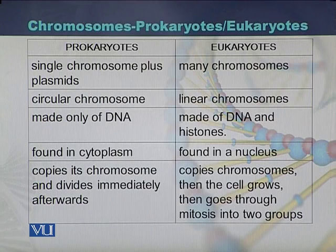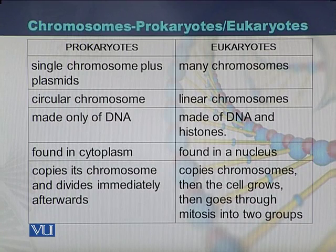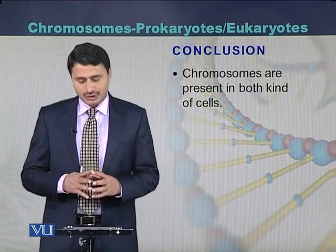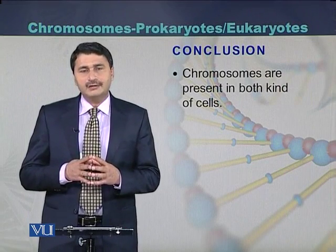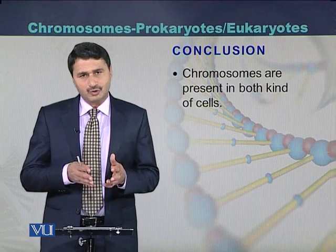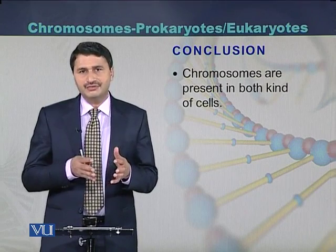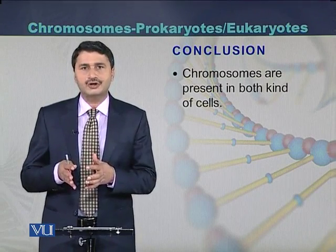Prokaryotic chromosomes are present in the cytoplasm, while eukaryotic chromosomes are found within the nucleus. Prokaryotic chromosomes copy and then divide immediately, while in eukaryotic cells the chromosome is copied, the cell grows, and ultimately divides into two daughter nuclei. In summary, chromosomes are present in both prokaryotic and eukaryotic cells, although there are key differences between them.